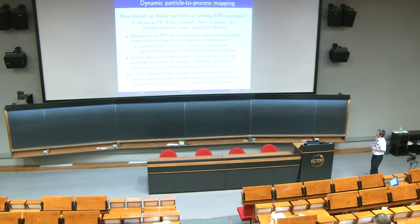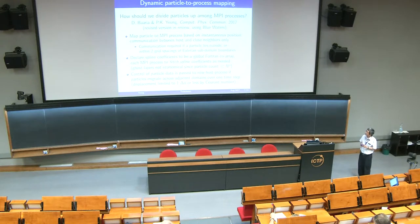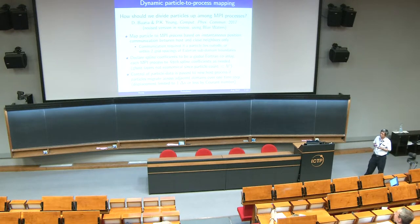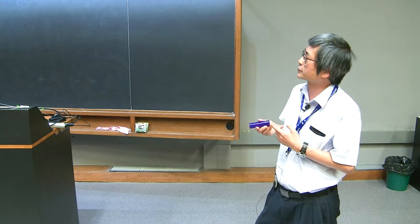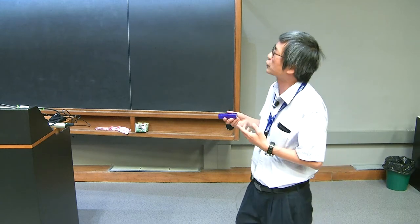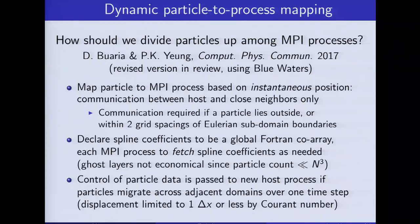What we have to do is divide up the data based on the instantaneous position. At every time instant, we figure out where the particle is, determine which subdomain it is located in, and turn over control for that particle to that particular process. So we are essentially mapping the particle to the MPI process based on its instantaneous position.